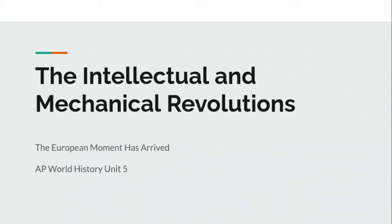Unit 5 is the European moment, the Age of Revolutions. There's a lot that we're going to be covering over the next three or four or five weeks. We have to move kind of quickly to get through it, because we need to be done by Christmas break. I've been working on this PowerPoint for AP World for a while. We're going to move up through absolutism.